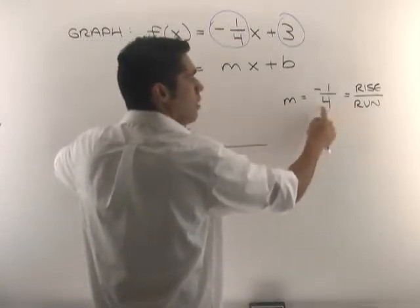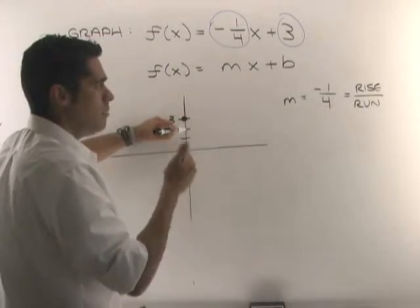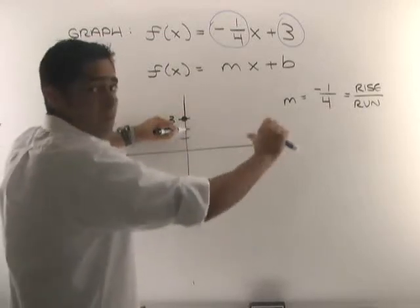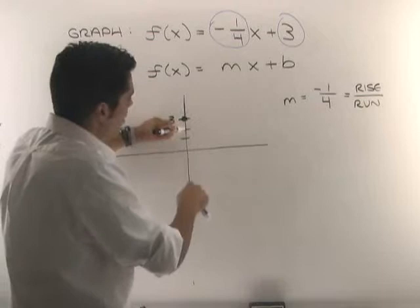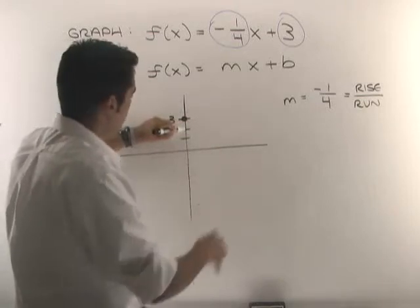Then I'm going to run four. Now, four means to the right. If it was negative four, it would be to the left. So I've gone down one, and now I'm going to go to the right four places.